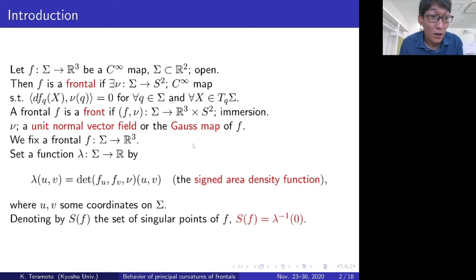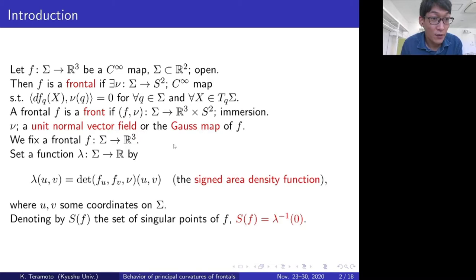Moreover, a frontal f is said to be a front if the pair (f, ν) gives an immersion. We call the map ν a unit normal vector field, or the Gauss map of f.